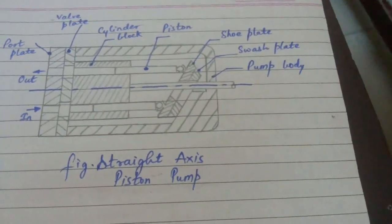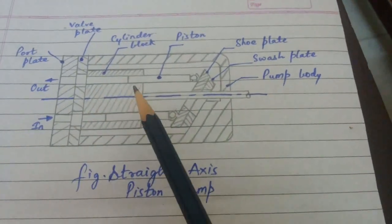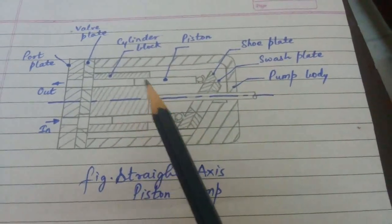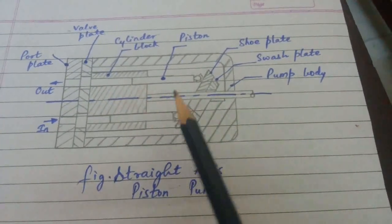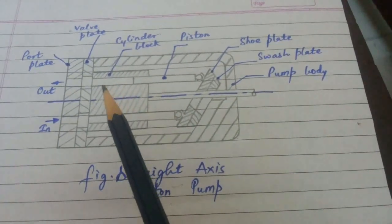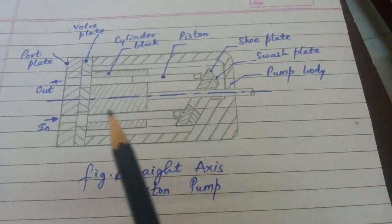And what happens is that the half rotation, which is cylindrical block, there is a suction, and the next half rotation is discharge. Because the piston goes out, the half rotation is suction, and the half rotation is discharge.